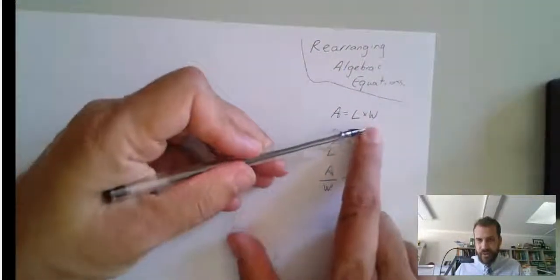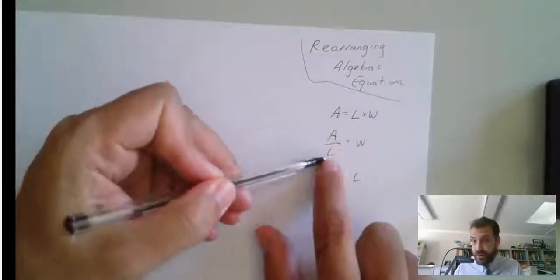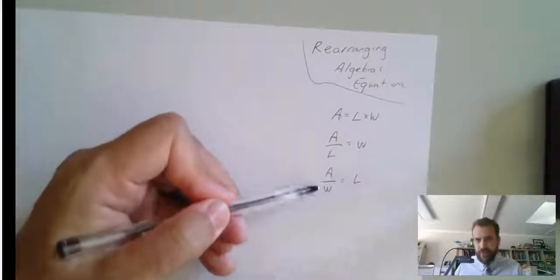This is handy because now I don't just have a formula to find the area of a rectangle. I have a formula to find the width of a rectangle if I know the area and the length. And I have a formula to find the length of a rectangle if I know the area and the width.